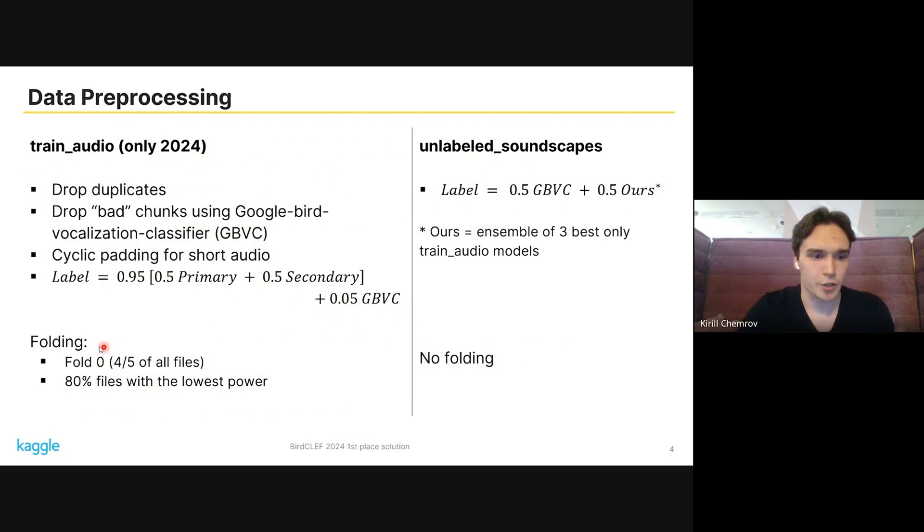We use two strategies for folding the data. First, we use simple five-fold splitting and notice that fold zero shows the best public score. That's why we conduct the vast majority of our experiments on this fold.